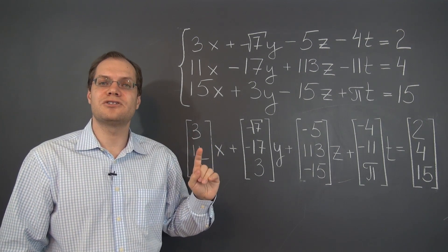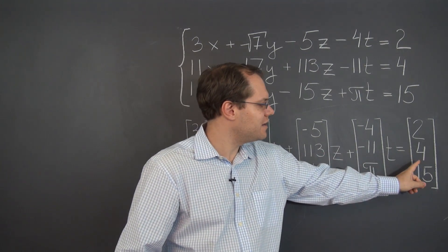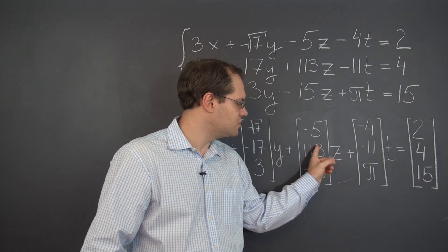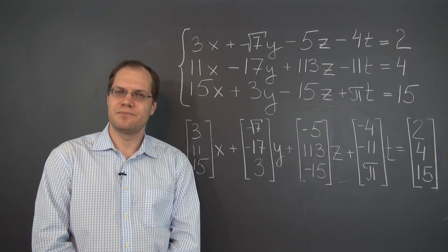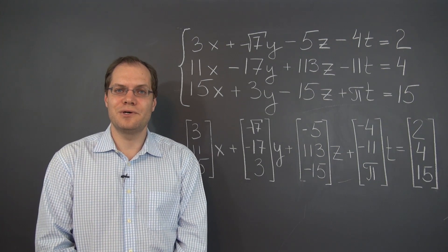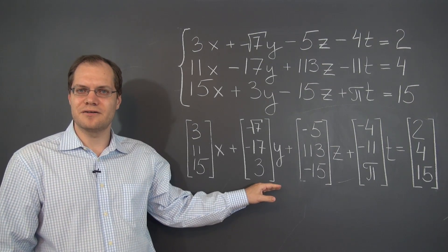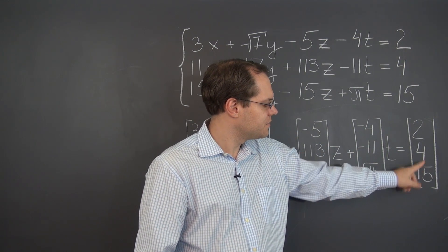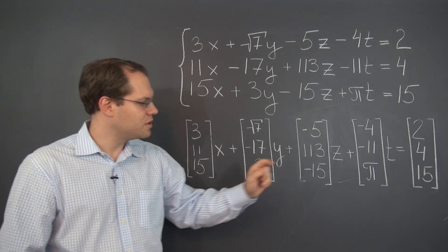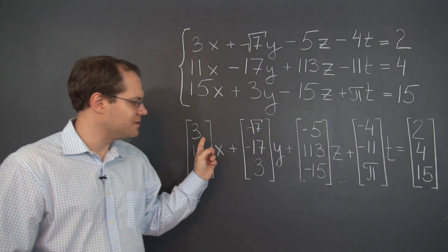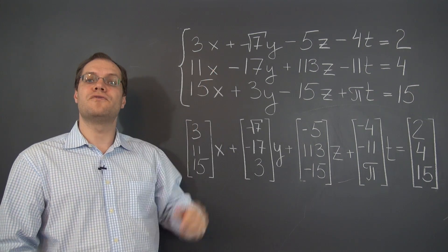So let's first address the question of whether there is a solution. That question is equivalent to finding out whether this vector can be decomposed as a linear combination of these four — is the decomposition possible? Sometimes just saying the question in a different way helps in realizing the answer. So let me paraphrase: is this vector in the span of these four? That's equivalent to asking whether this vector can be expressed as a linear combination of these vectors, which in turn is equivalent to this linear system.